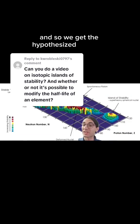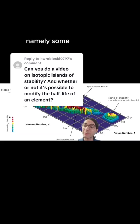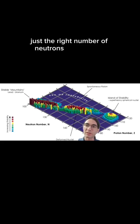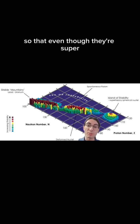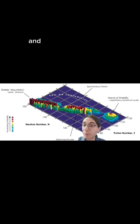And so we get the hypothesized island of stability, namely some atoms might have just the right number of neutrons and protons so that even though they're super super heavy, they're still stable. And maybe we'll see one soon.